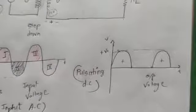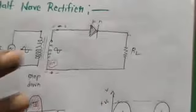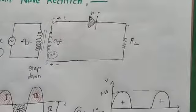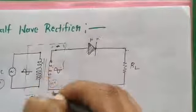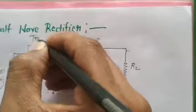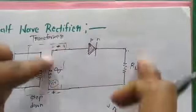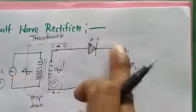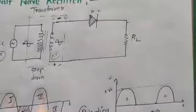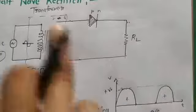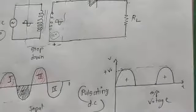This entire process is called half wave rectification, and the circuit is a half wave rectifier. The transformer steps down the voltage, and the PN diode with the load resistance RL forms the rectifier section. Since only the positive half cycle appears at the output, it is named half wave rectifier. In the next class we will study the full wave rectifier.